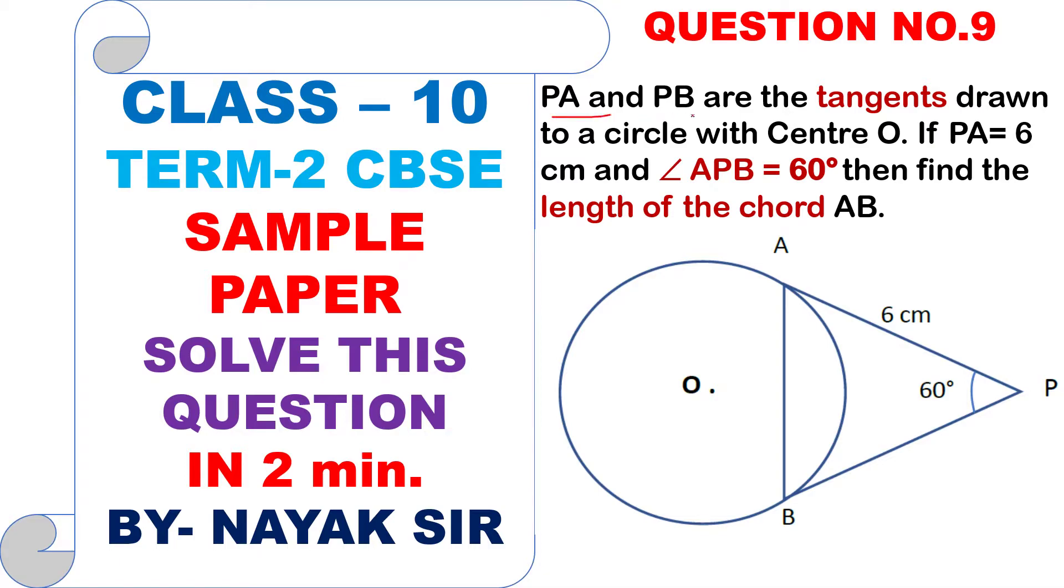The question is, PA and PB are two tangents to a circle with center O. If PA is equal to 6 cm and angle APB is equal to 60 degree, then find the length of chord AB. This is your chord AB.